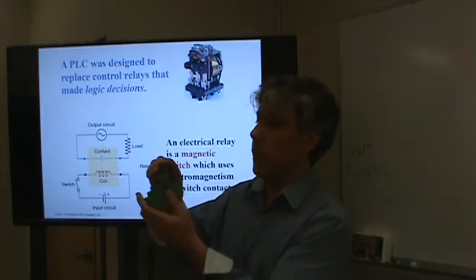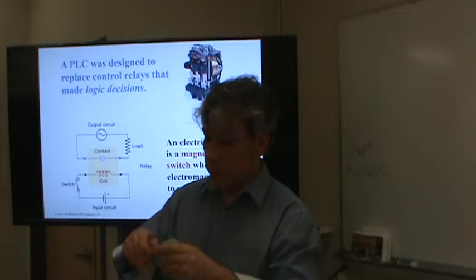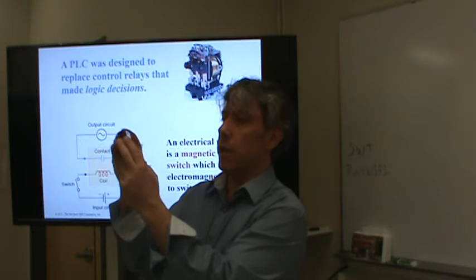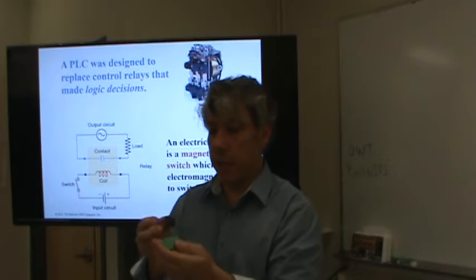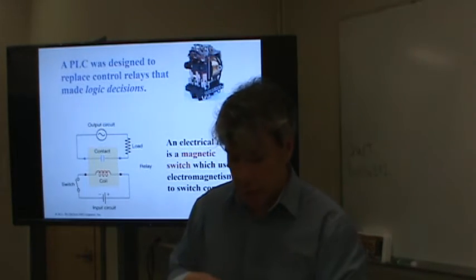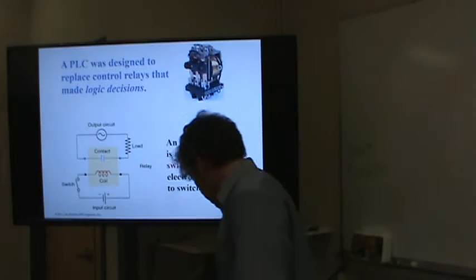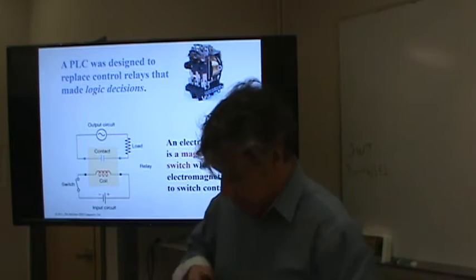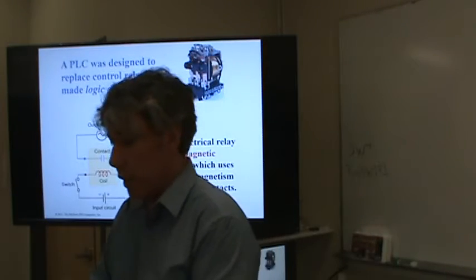Here's another one by Phoenix Contact — they make really good, reliable stuff. They even have a nice little lever to help you remove it. This one has two terminals that go to the blue coil and then four switches in a line. These switches have what's called normally open and normally closed contacts — I'll explain that with a much bigger relay in a moment. This third one only has one coil and two switches.